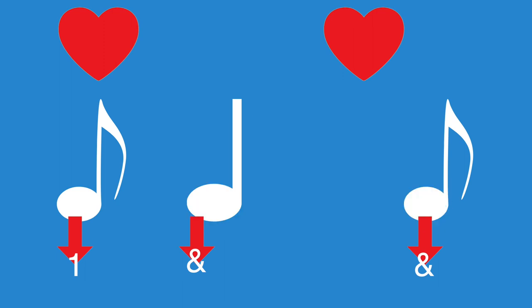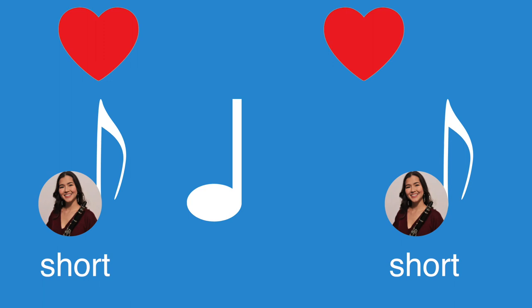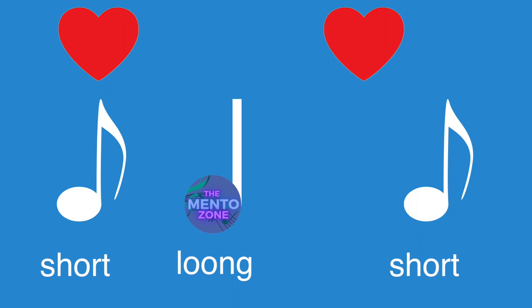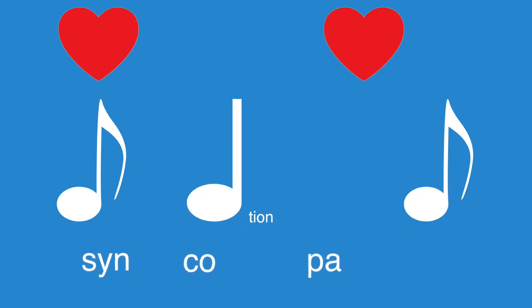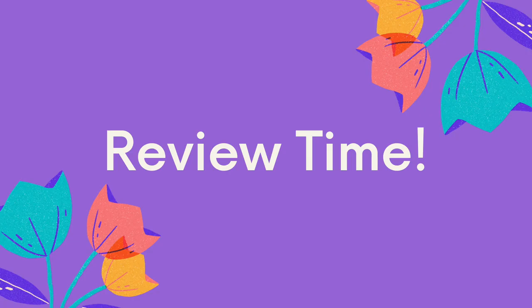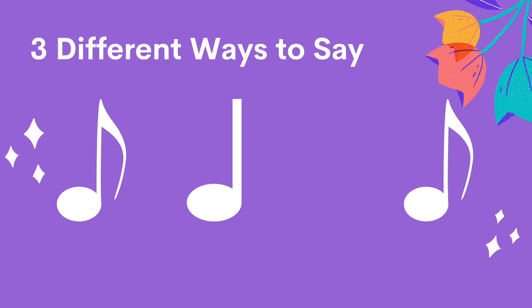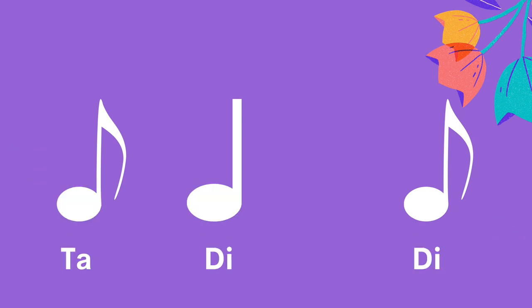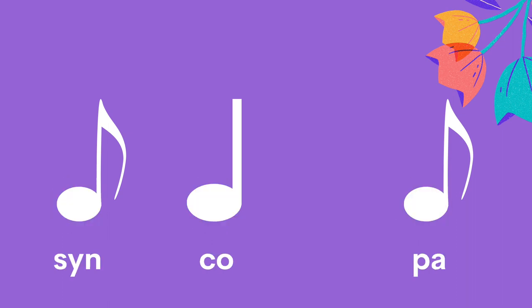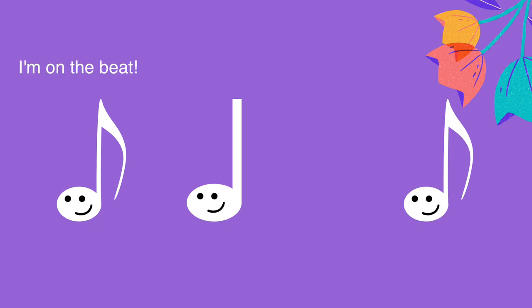Something that helps me remember this rhythm is that there are two short notes on the outside and one long note in the middle, so sometimes I'll think of it as short, long, short. Or if you want to help remember that it's called syncopation, you can also just say: syn-co-pa. So to review, we have many different ways to say this new rhythm — using takadimi syllables: ta-di-di; using the number system: one-and-and; or we can simply say syn-co-pa to remind us that this is a syncopated rhythm.